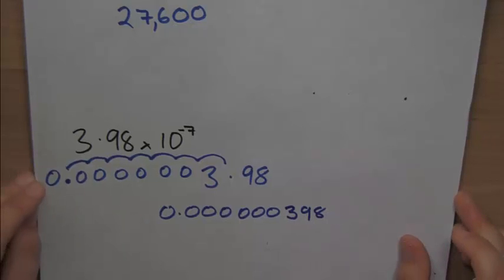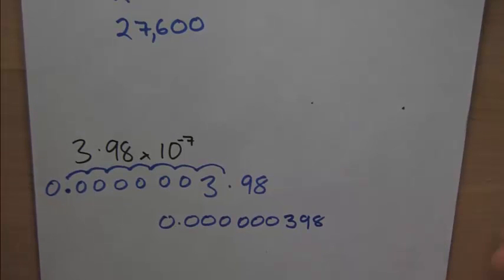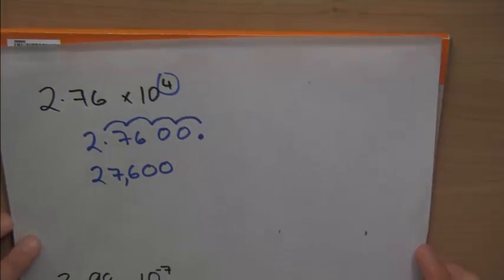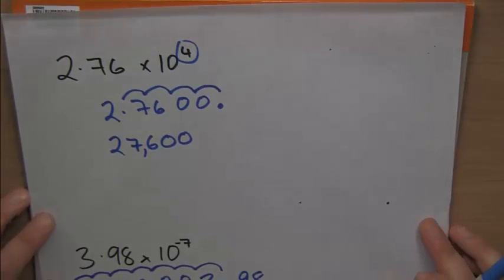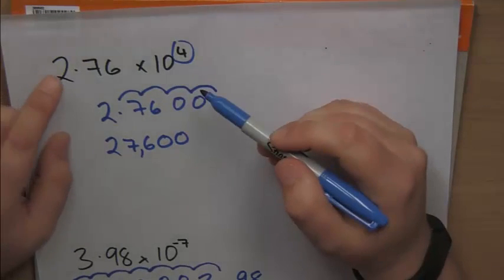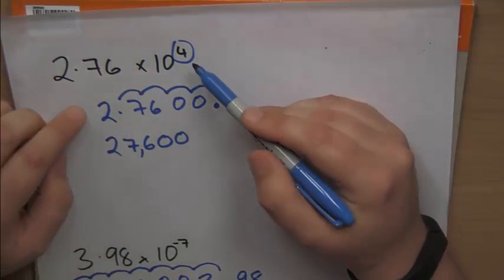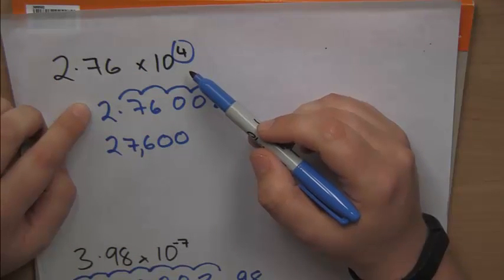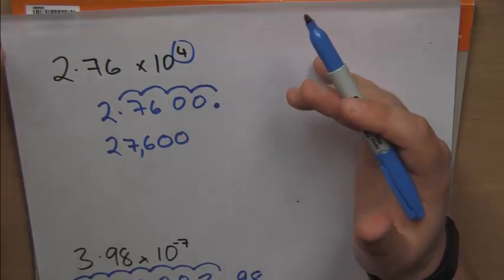Now, I'm going to show you a little tip here, because that can get quite messy. We want an easier way of doing that. So let's look at our original one. We had 2.76 times 10 to the 4.